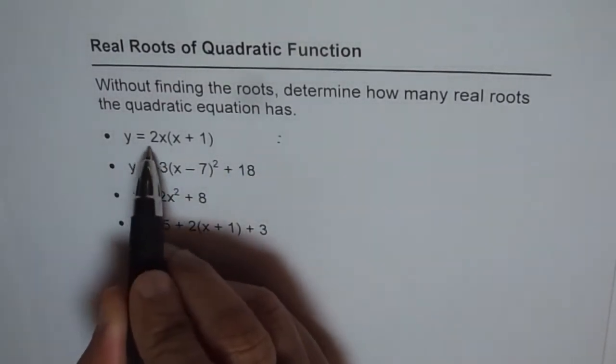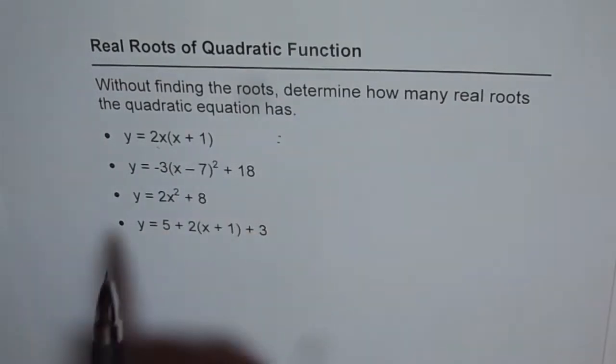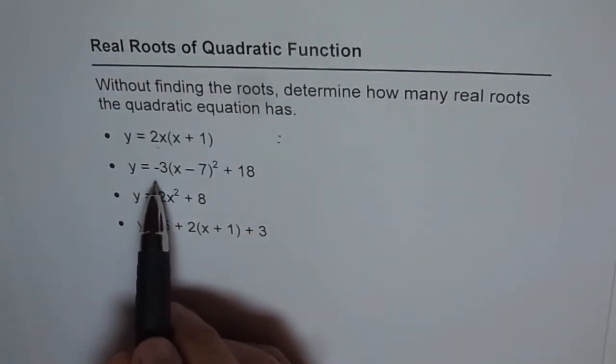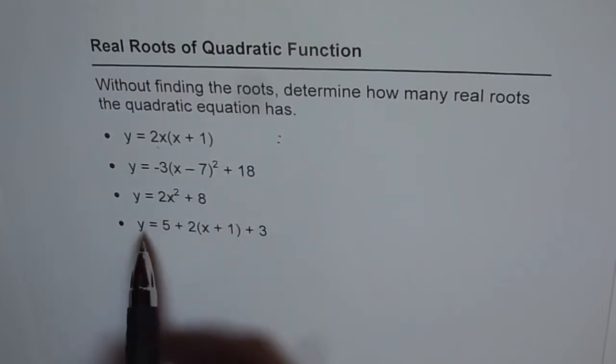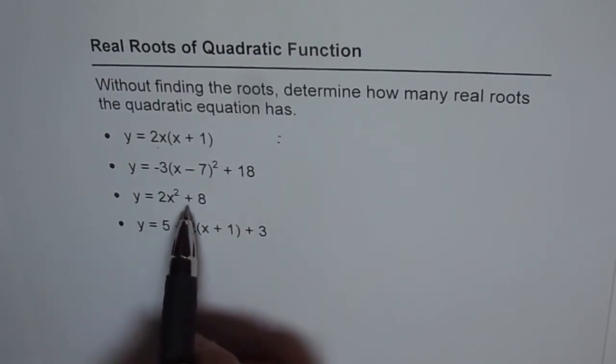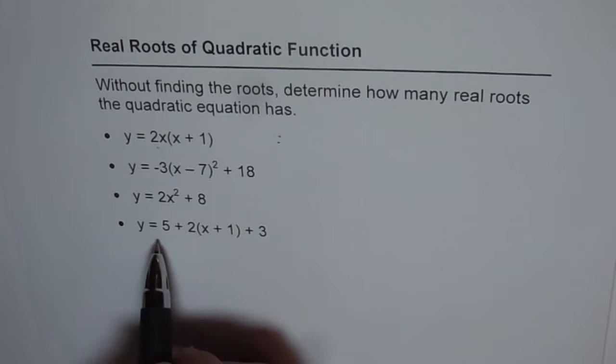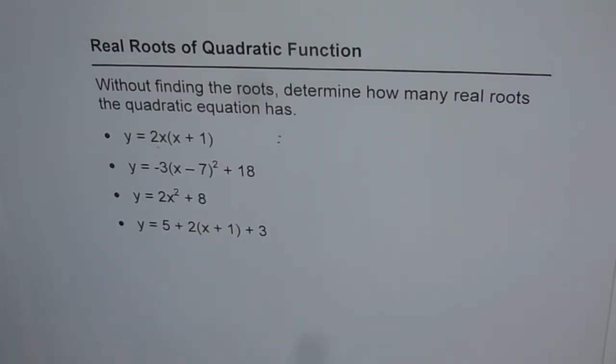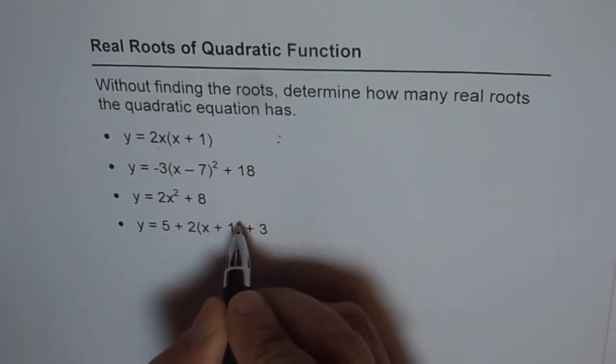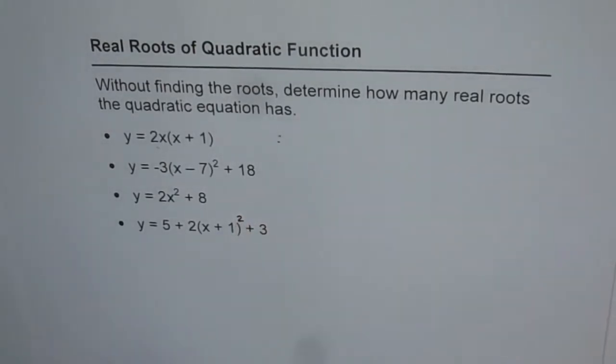So the first one is y equals to 2x times x plus 1. The second is y equals to minus 3 times x minus 7 to the power of 2 plus 18. The third is 2x squared plus 8. And the fourth one is 5 plus 2 times x plus 1 squared plus 3. That means 5 plus 3 is 8. We can combine it. And here we should have square. So these are the 4 different equations for us.